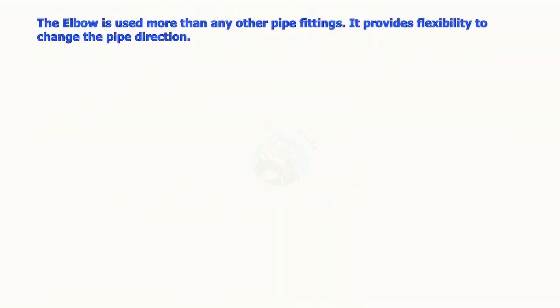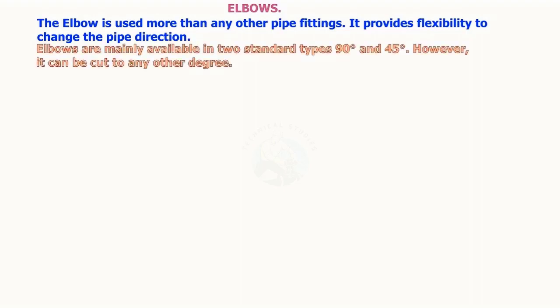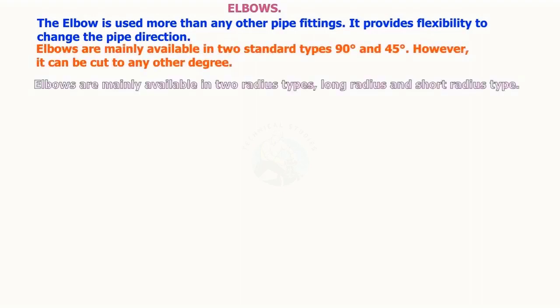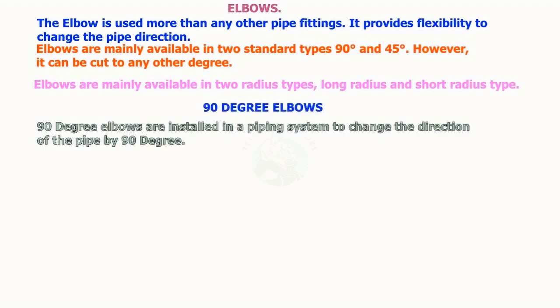The elbow is used more than any other pipe fitting. It provides flexibility to change the pipe direction. Elbows are mainly available in two standard types: 90 degrees and 45 degrees; however, it can be cut to any other degree. Elbows are mainly available in two radius types: long radius and short radius.